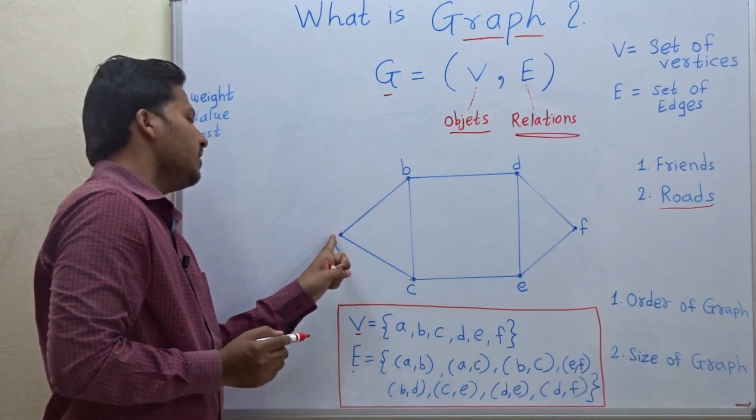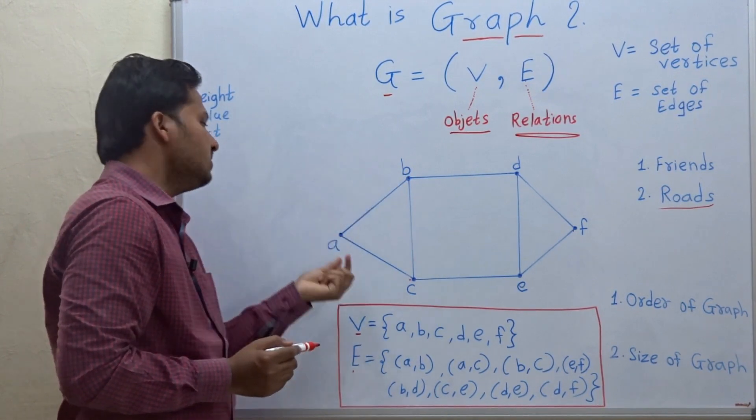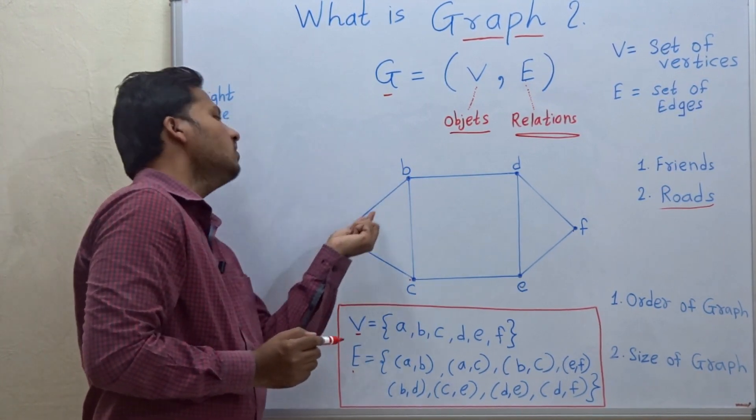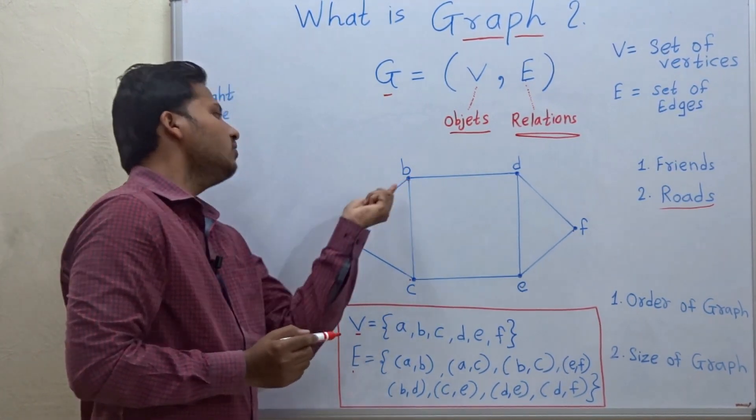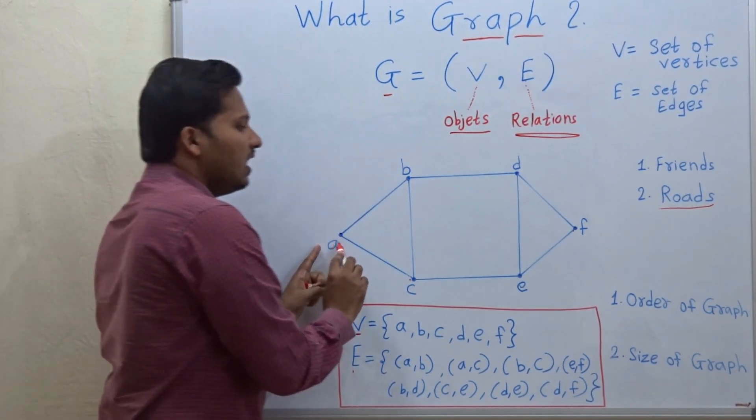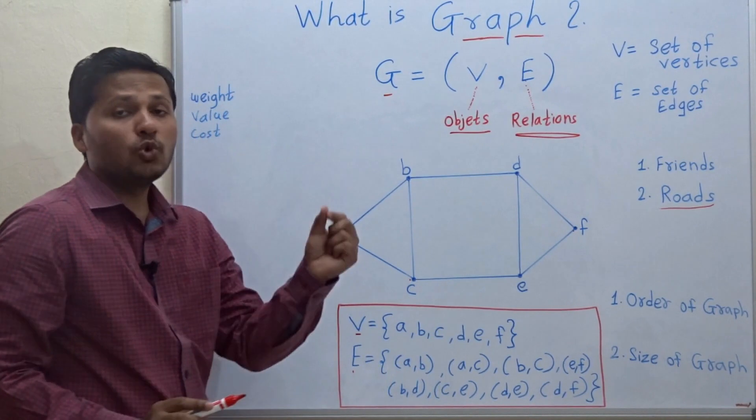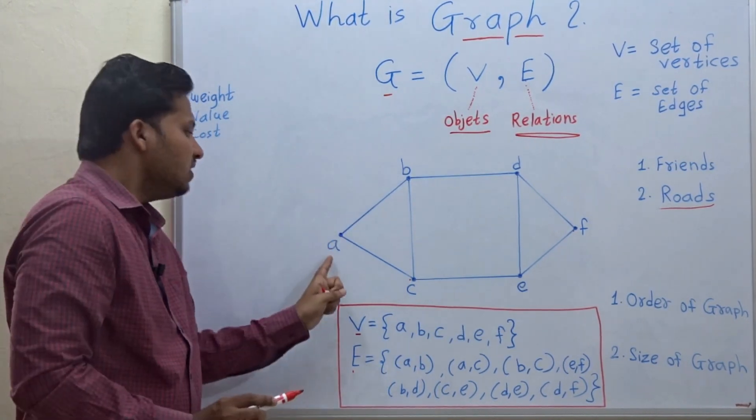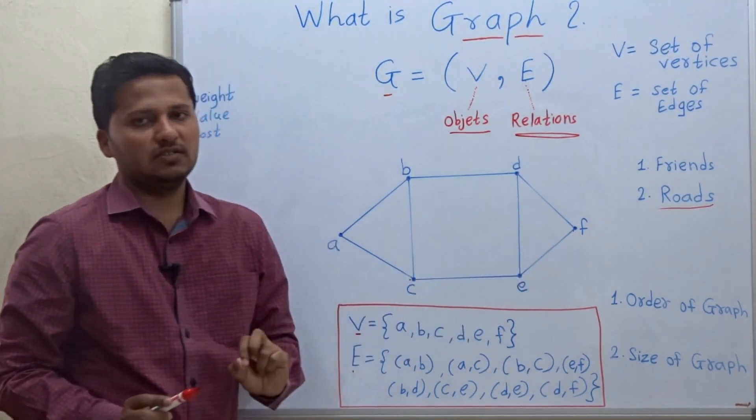There is a direct road between city a to city b. But there is no edge between a and f means there is no direct road between a and f here.